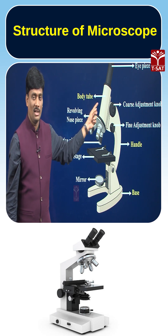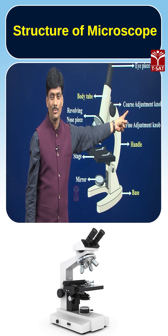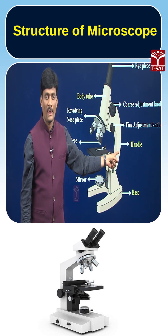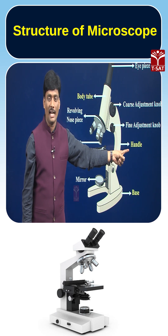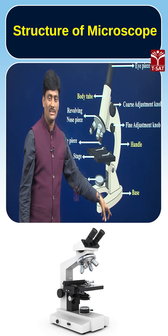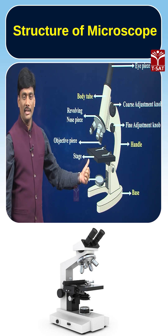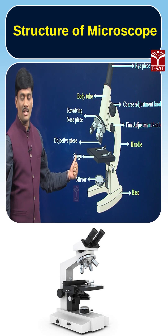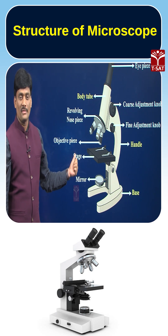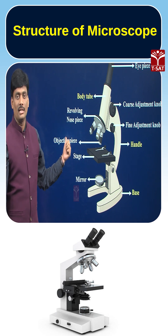Now you can observe the parts present in a microscope. Here is the body tube, here is the eyepiece, the coarse adjustment knob, the fine adjustment knob, and here is the handle. Here you can see the base, and this is the mirror.